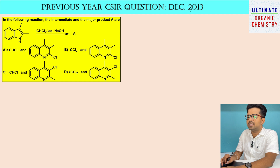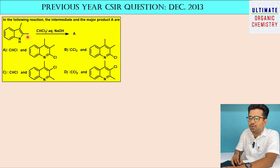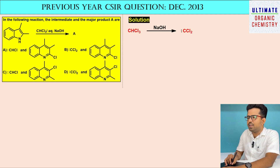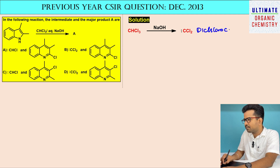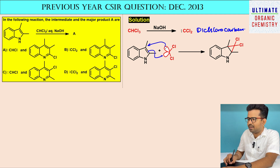Now let us go to the previous year CSIR question part. This question was asked in December 2013 CSIR examination. The question involves 2,3-dimethylindole — we have discussed the reaction for pyrrole, but here they have asked about the indole molecule. This indole molecule is treated with chloroform and aqueous sodium hydroxide; they are asking what intermediate is formed and what product is formed.